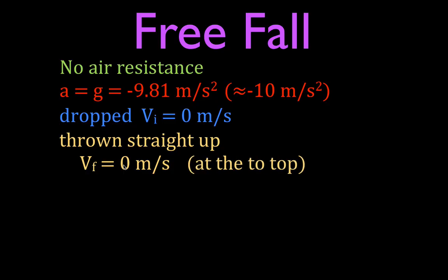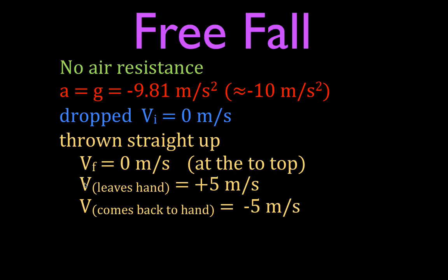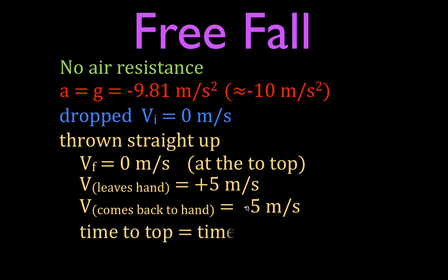Also, when you project something straight up, say it leaves your hand at 5 meters per second — when it's moving up, that's positive 5 meters per second. When it comes back down to the same place from which it was projected, the speed is the same — 5 meters per second — but now it's traveling in the negative direction, so the velocity is negative 5 meters per second. Also, the time it takes to get to the top of its path will equal the time it takes to come back down. These are things to keep in mind that will help simplify problems and give you better conceptual understanding. We'll do an example right now.